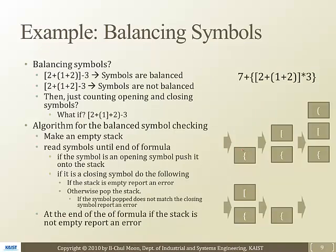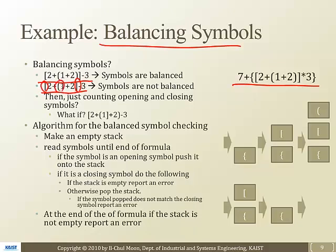This is a small example of the balancing symbols. This is a perfectly OK formula. How about this? This is also a perfectly alright formula. This one is not, because this bracket corresponds alright, but this parentheses doesn't correspond. So these symbol brackets are balanced here. Symbols are not balanced here.